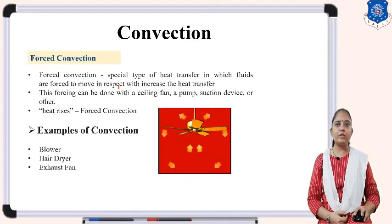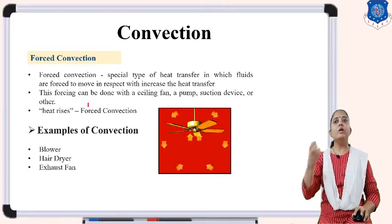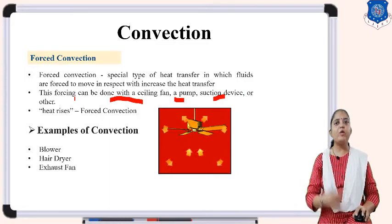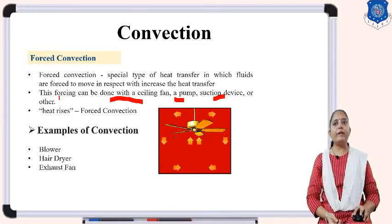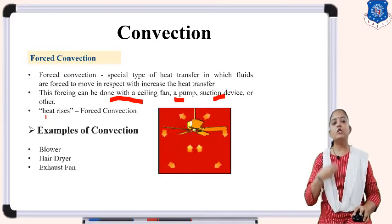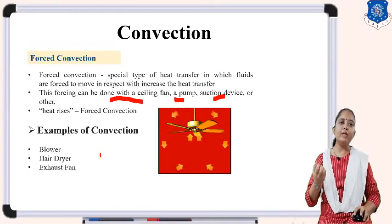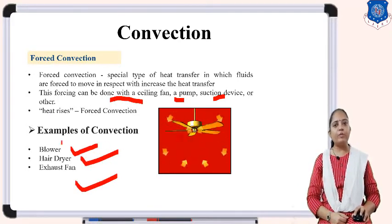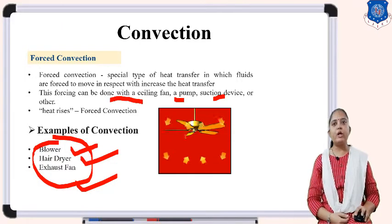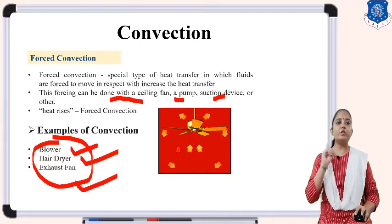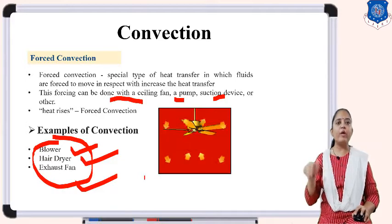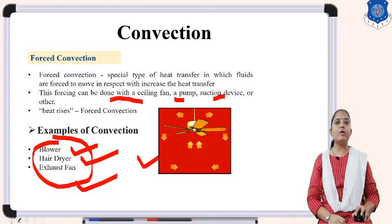Now, what is forced convection? In forced convection, heat transfer in a fluid occurs using an external force — such as a ceiling fan, pump, suction device, or similar device. Due to the applied force and velocity, heat rises comparatively more than in natural convection. Examples are a blower, hair dryer, and exhaust fan. In the diagram you can see a ceiling fan — hot air and cold air move from upward to downward and downward to upward due to the applied force.